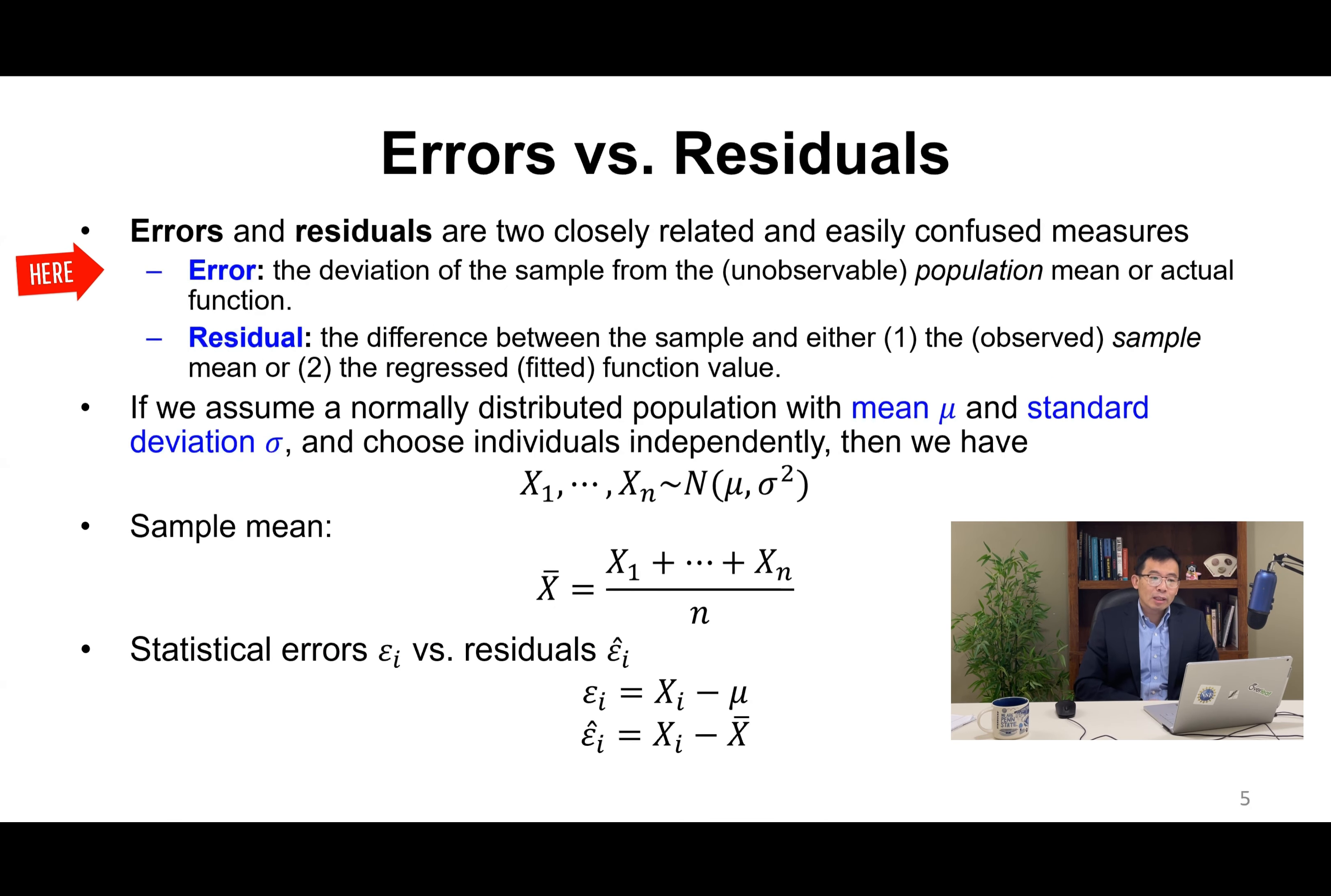Errors and residuals are two closely related but easily confused measures. Error is a deviation of the sample from the unobservable population mean or the actual function. Residual is the difference between the sample and either the observed sample mean or the regressed fitted function value. Please note, population mean in general is unobservable so errors are unobservable, but if you collect a sample you can compute the sample mean and see the deviation of each sample from the sample mean.